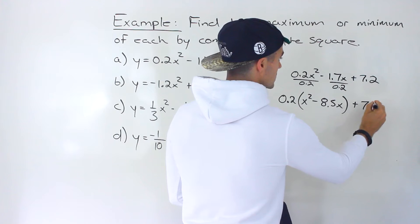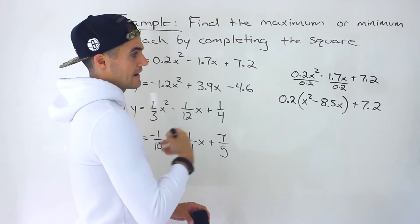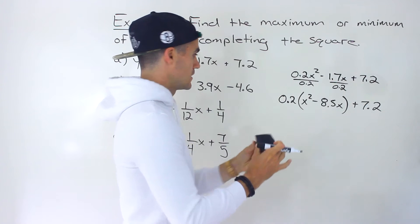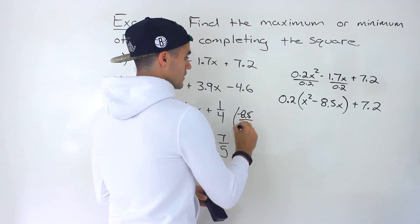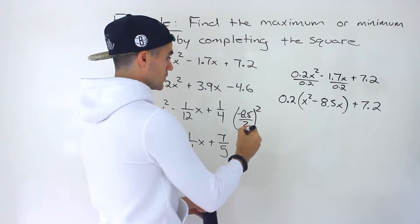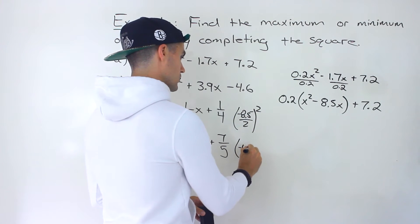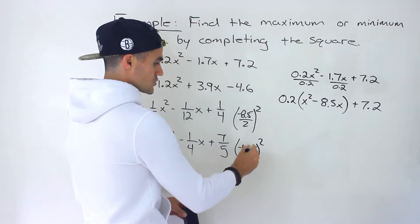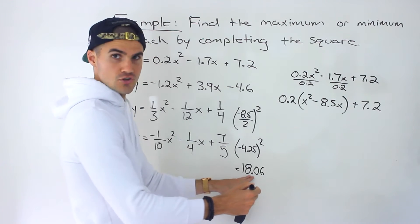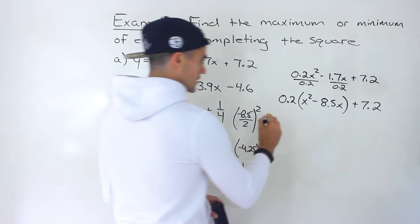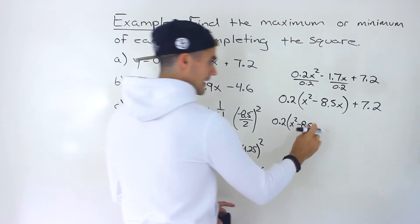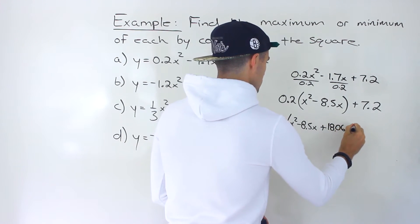We leave the 7.2 as is. Now at this point in the completing the square process, you take the b value for the quadratic inside the bracket, divide it by 2, and then square it to get a value you can add in to create a perfect square trinomial. So that would be negative 4.25 squared, and when you square that you get approximately 18.0625 — I'll round it to two decimal places as 18.06.